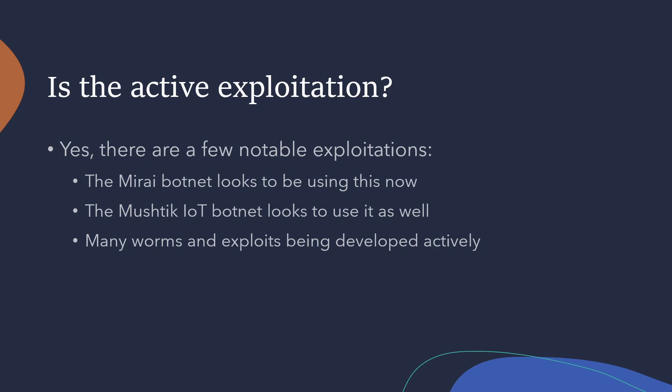Essentially, what these botnets are doing is using the exploit to compromise computers — since they can run any commands they want, they gain remote access to these computers, effectively taking them over and bringing them into the botnet. This botnet can then be used for any number of things: denial of service attacks, or the compromised computers can be sold to other attackers to be used as jump boxes. We're also seeing a lot of worms and exploits being actively developed. Because this vulnerability can be triggered over the network, it's very easy to generate worms — if you compromise one computer, you can spread the attack to anything else on that network very quickly.